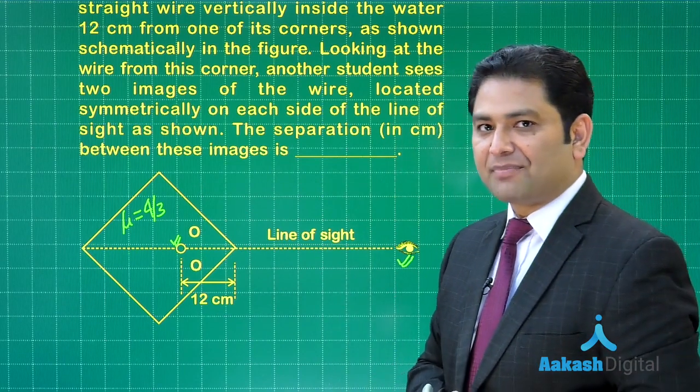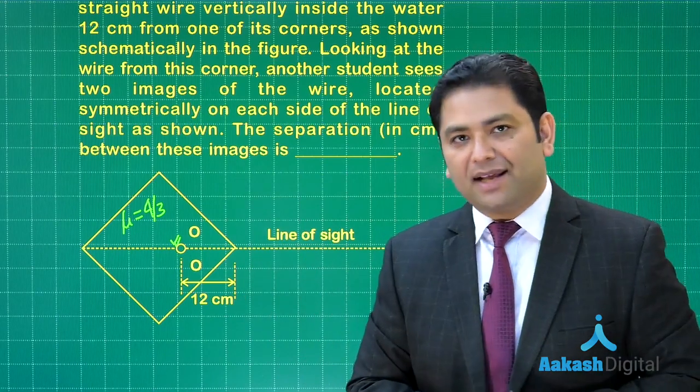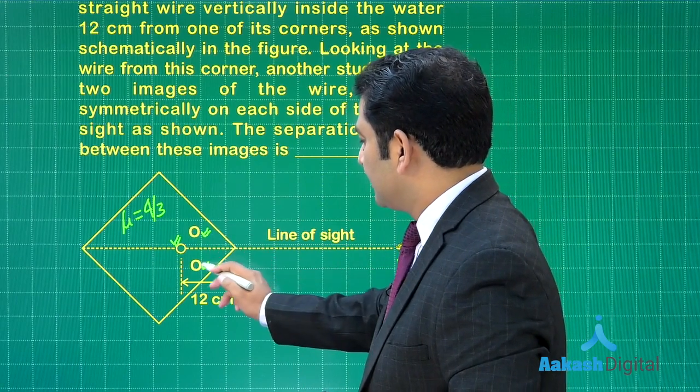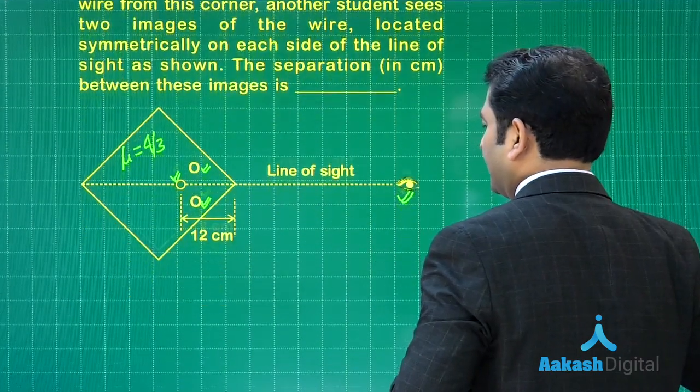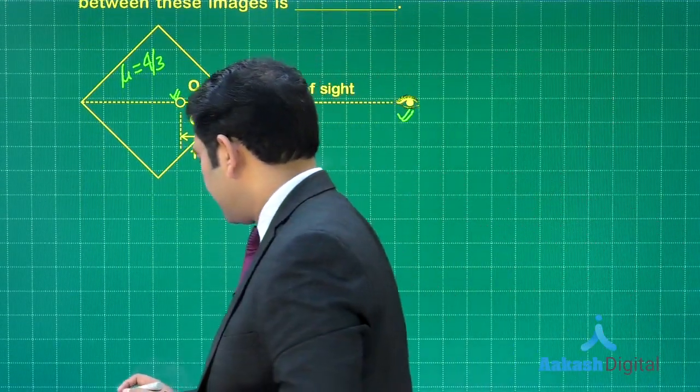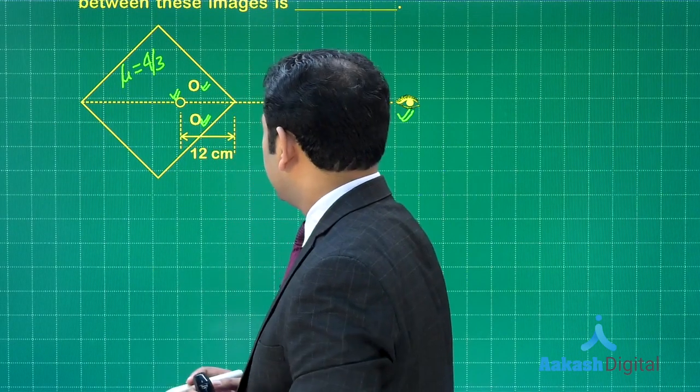We need to calculate the separation in centimeters between these images. No formula would be valid because this is not a paraxial situation. These are the two images which would be observed, so we need to calculate this separation between them.